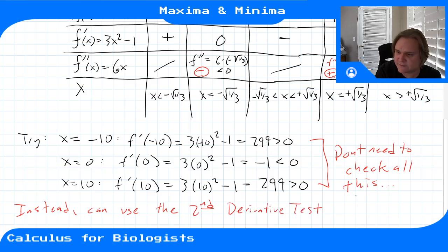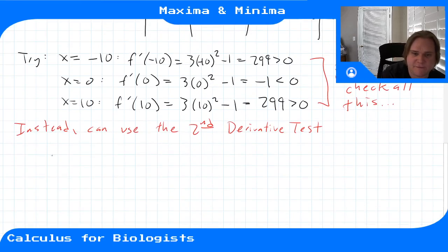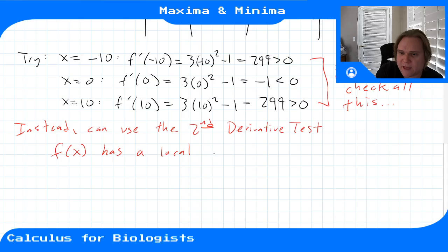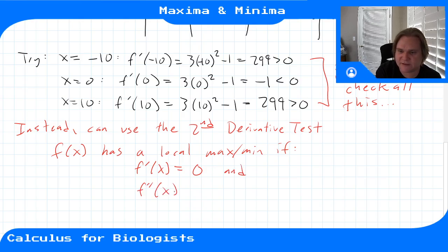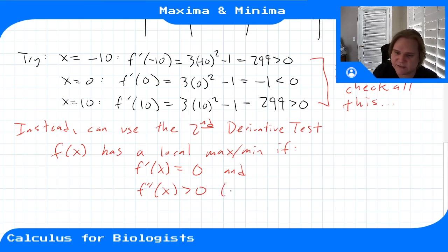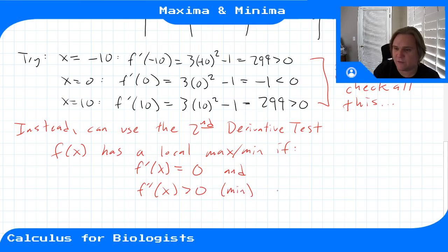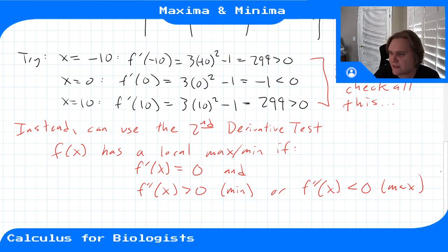The second derivative test says: f(x) has a local max or min if f'(x) = 0 and f''(x) is nonzero at that point. If f''(x) > 0, the function is concave up—that's a local minimum. If f''(x) < 0, it's concave down—that's a local maximum.